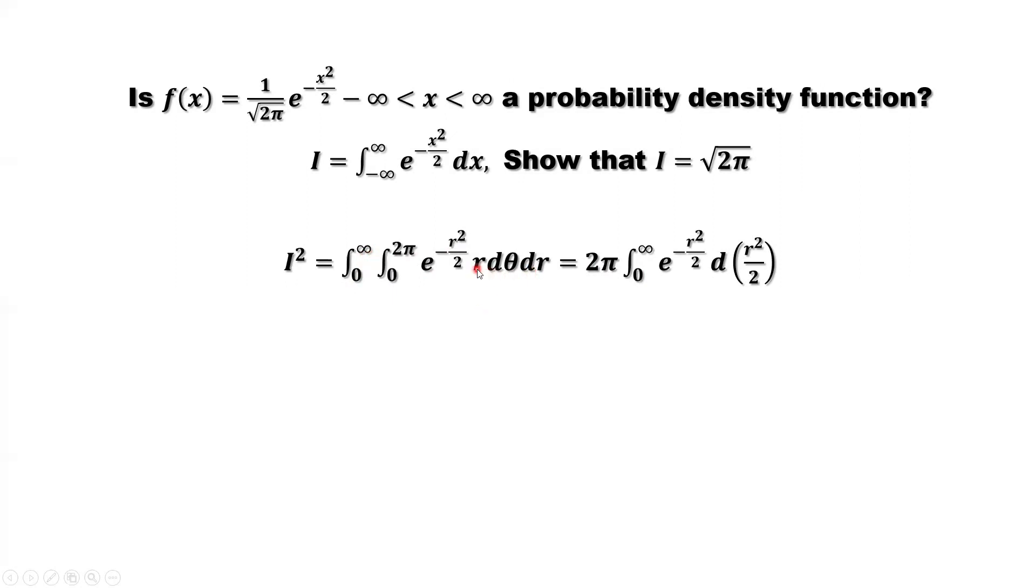And consider this integral from zero to infinity with respect to little r. We can put the little r back inside. That's d(r²/2). From here, if you cannot see it, you can define a new variable like t equals r²/2. If you can see it, that's one variable.